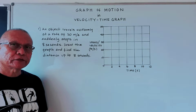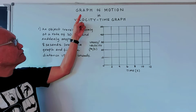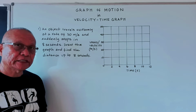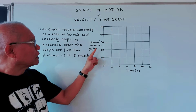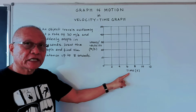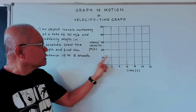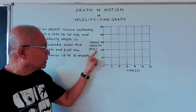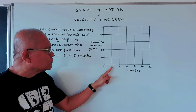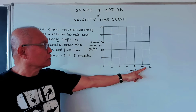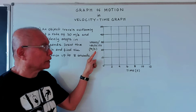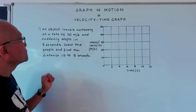Good day learners. Today our topic is about graph of motion and velocity-time graph or speed-time graph. We have our speed or velocity-time graph with time on the x-axis, velocity in meters per second on the y-axis, and time in seconds. We have values 2, 4, 6, 8, 10 up to 12 seconds and 10, 20 up to 50 meters per second.